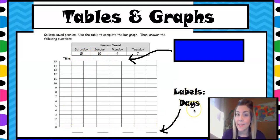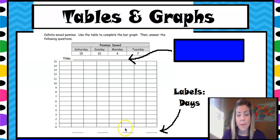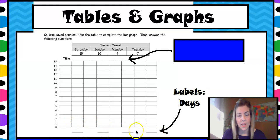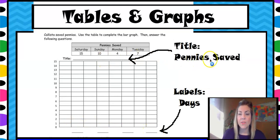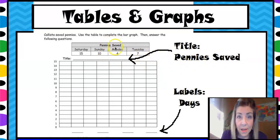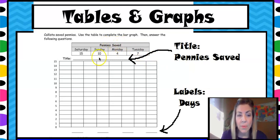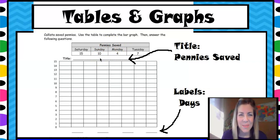The labels are going to be our days. So if I was to write it in, I would put Saturday, Sunday, Monday, Tuesday. Or you could put it in order: Sunday, Monday, Tuesday, and then Saturday at the end. Up here at the top where it says 'title,' your title is going to be 'Pennies Saved,' which is the same title that is up here in your table. All you have to do is take the title of the table and put it as the title of your graph, because the data we're going to show is the same thing — it's pennies saved.